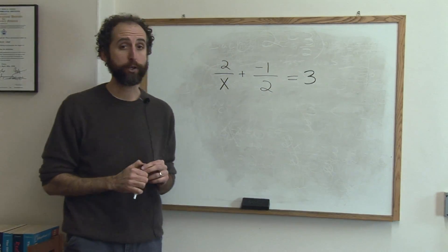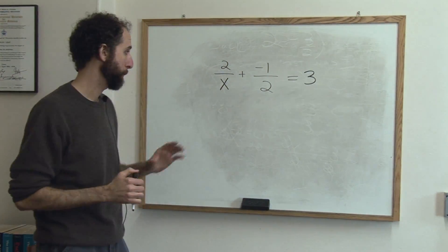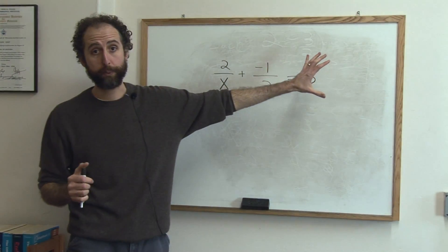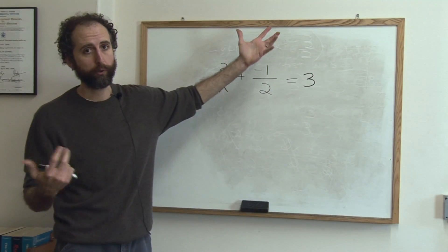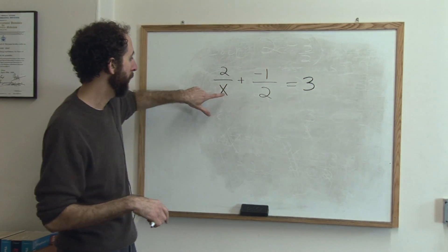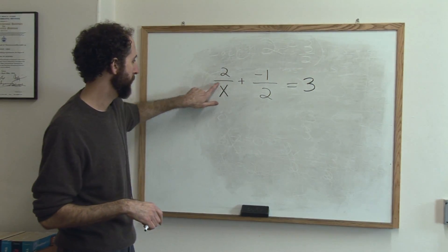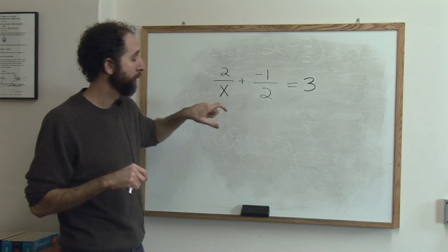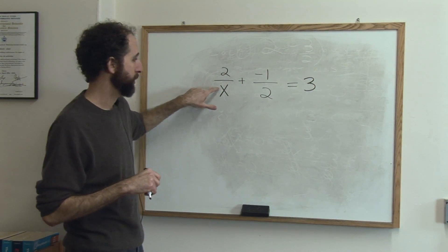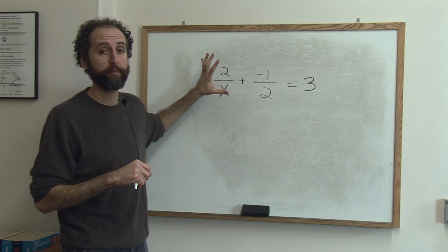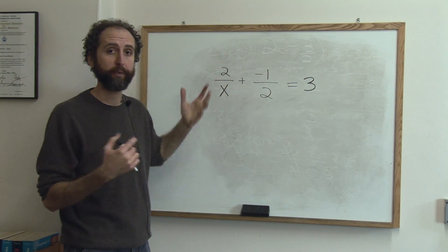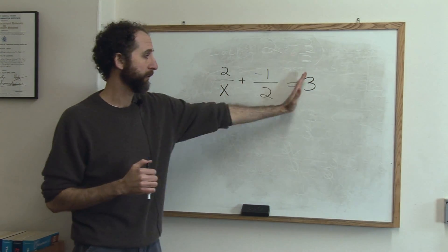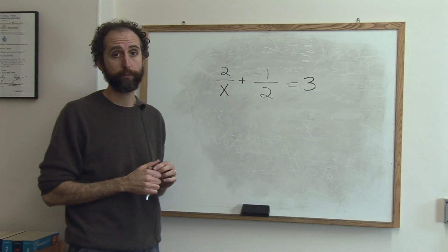Let's talk about solving rational expressions. This is what's called a rational expression, or a rational equation. Because it's rational — that's the technical term in math — because there's an x on the bottom of a fraction. That makes it a rational expression, and this makes it a rational equation.